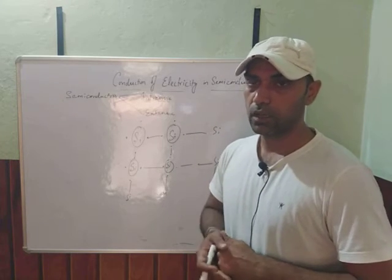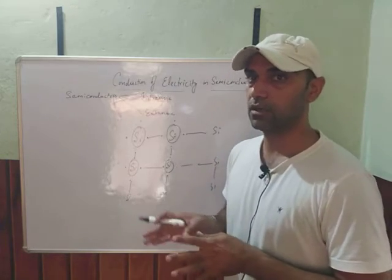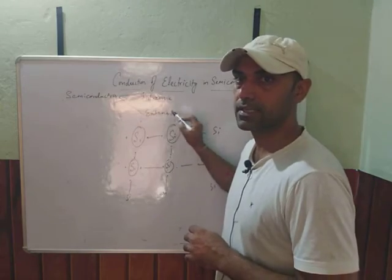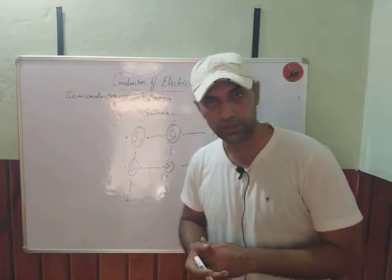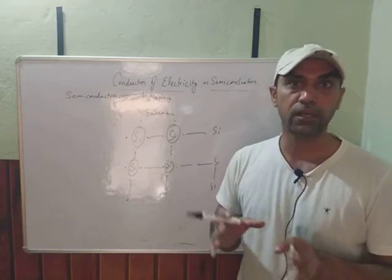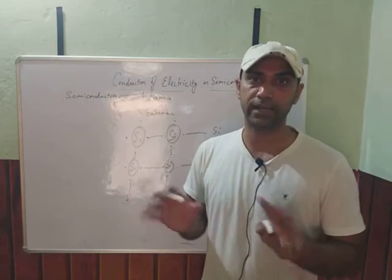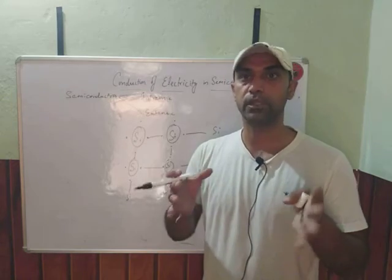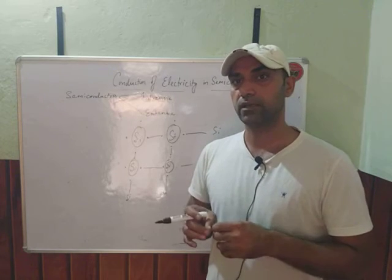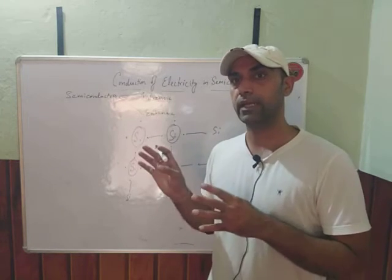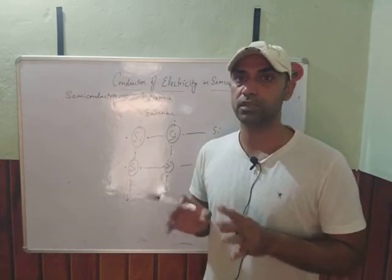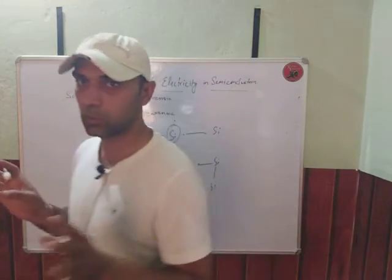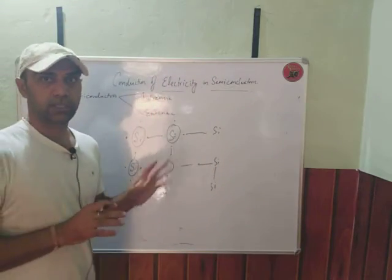We can divide semiconductors into two types: intrinsic semiconductor and extrinsic semiconductor. Intrinsic semiconductors are pure semiconductor crystals — pure means you haven't added anything. They are pure semiconductor crystals from which impurities have been removed. The semiconductor crystals you get after purification are called intrinsic semiconductors, and they have the same covalent bonding structure described above.